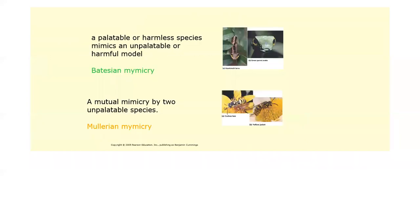There are different types of mimicry: Batesian mimicry, where a palatable harmless species mimics a harmful one to avoid predation, and Müllerian mimicry, where both species benefit by having the same appearance — mutually reinforcing the warning signal to predators.